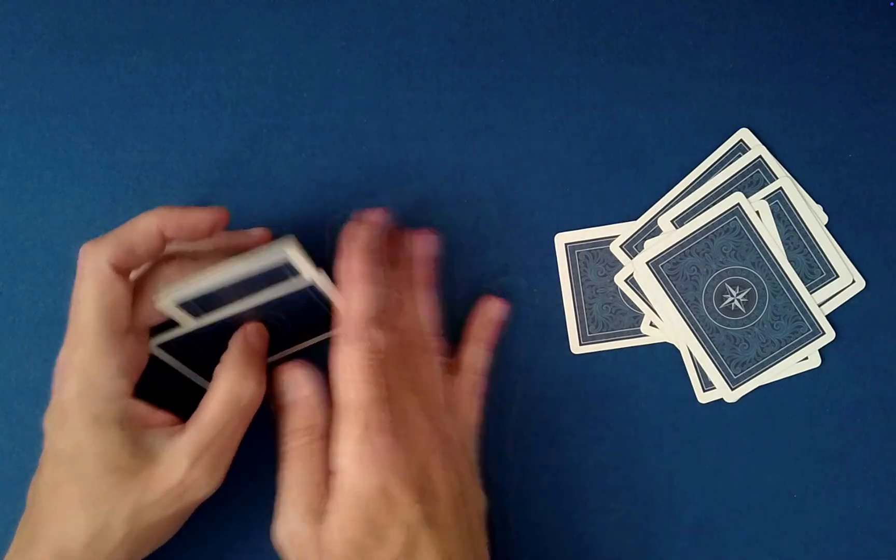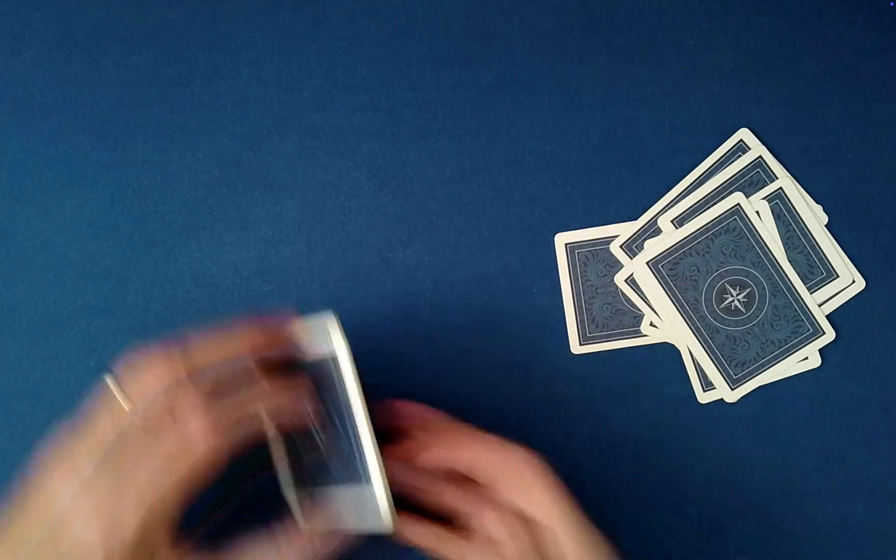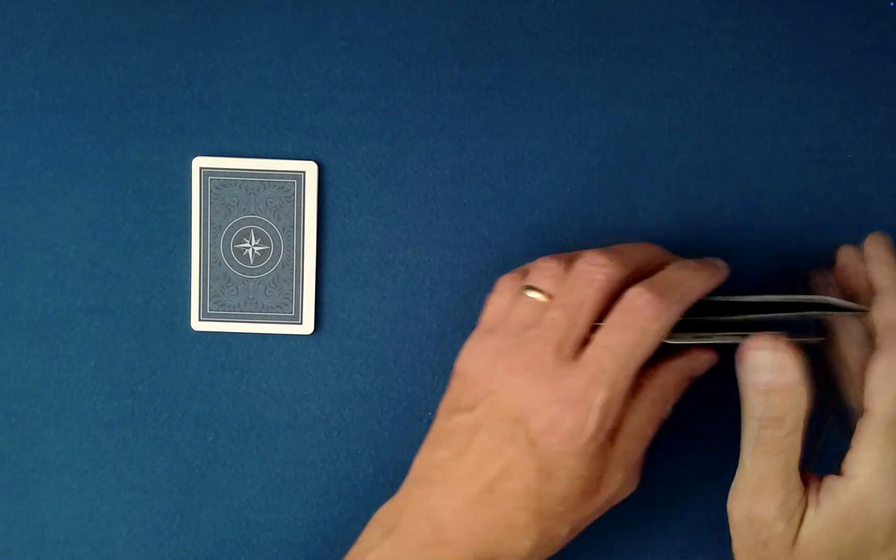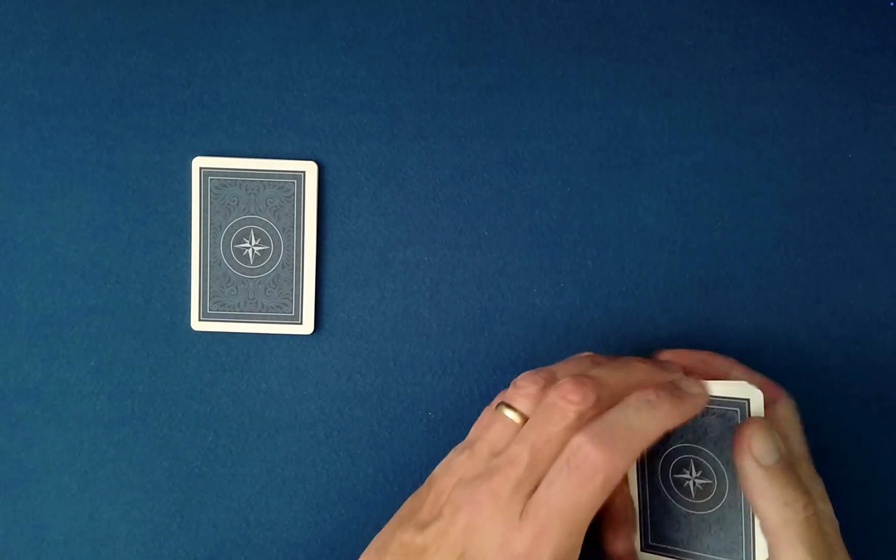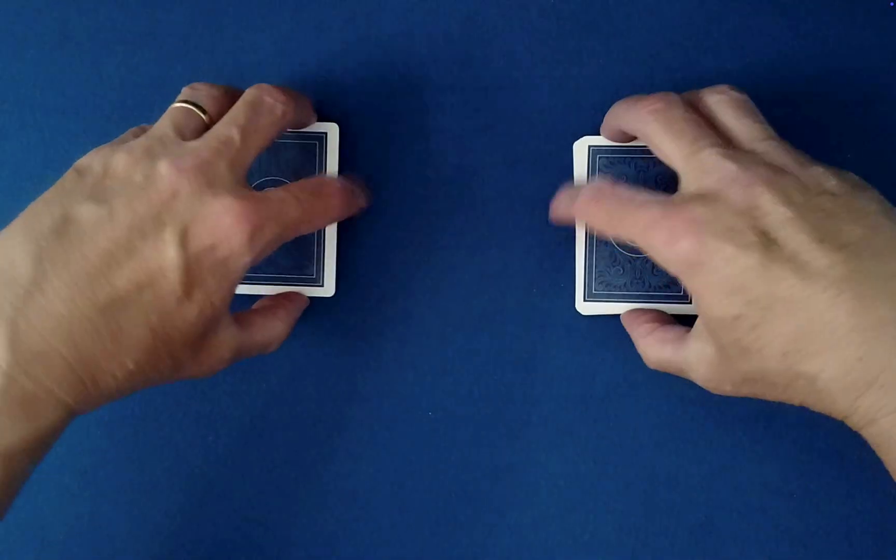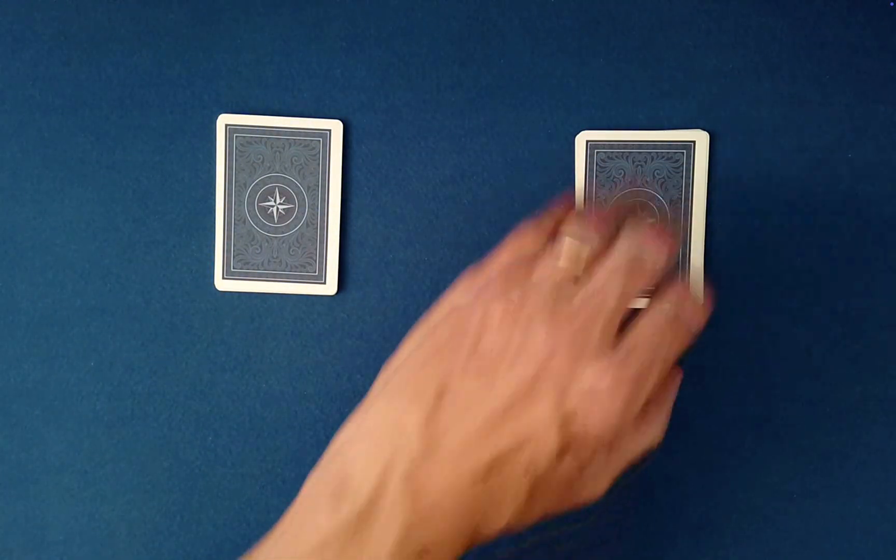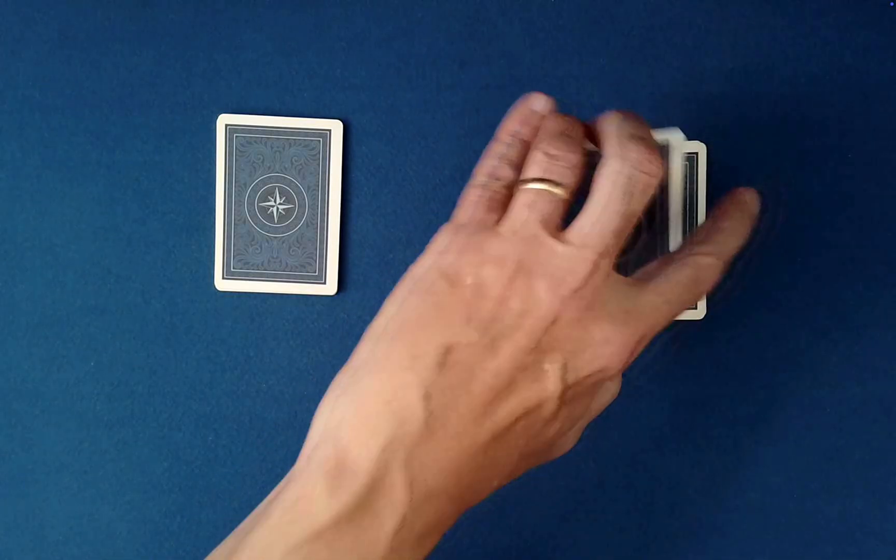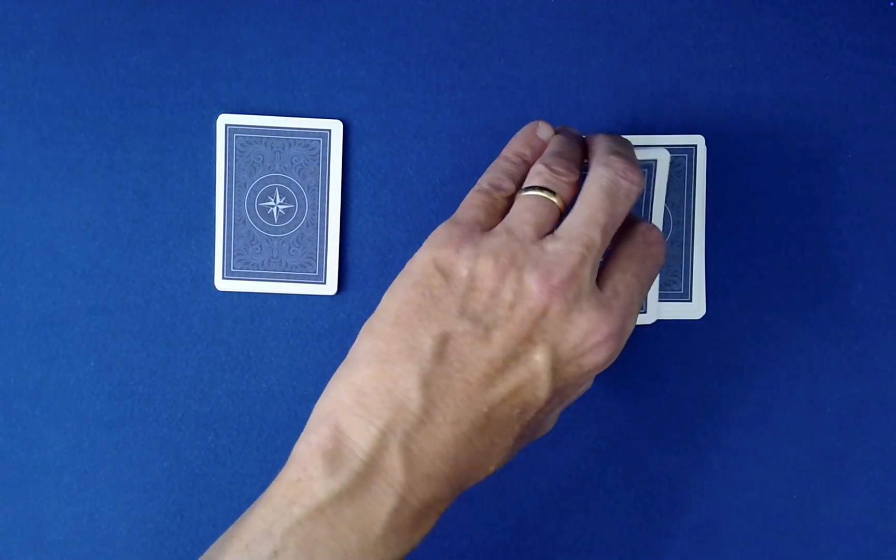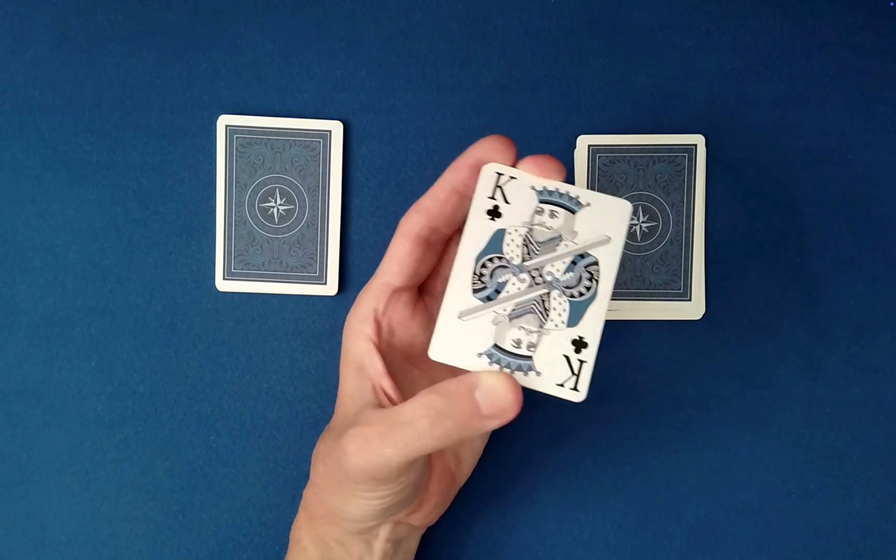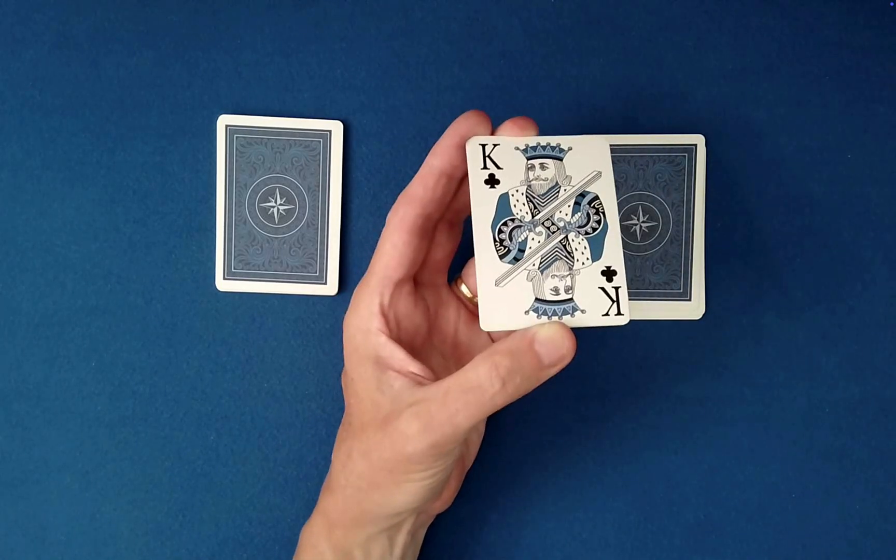We'll gather these up best we can, and now what I need you to do is point to either one of the piles. It's a free choice. Maybe you'll point to the one on my right here. What you need to do is cut off any number of cards whatsoever and take a look at the bottom card.